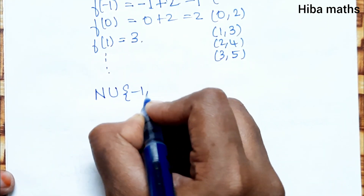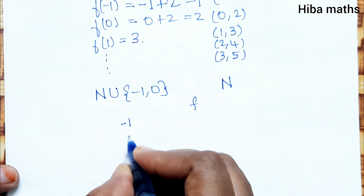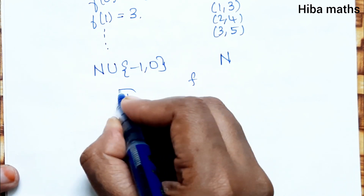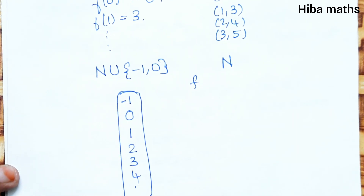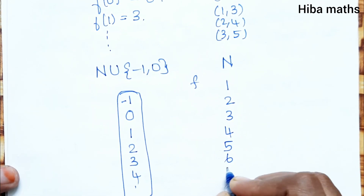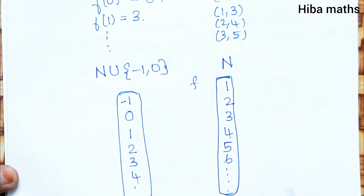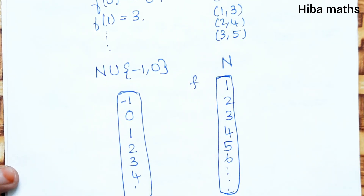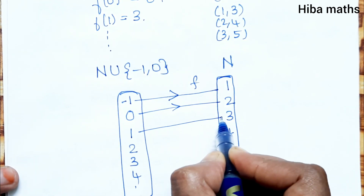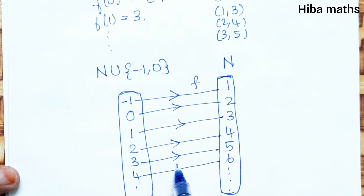Arrow diagram: domain is ℕ ∪ {-1, 0}, listing -1, 0, 1, 2, 3, 4 and so on. Codomain is ℕ: 1, 2, 3, 4, 5, 6 and so on. Mappings: -1 → 1, 0 → 2, 1 → 3, 2 → 4, 3 → 5, 4 → 6, and it goes on.